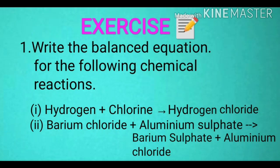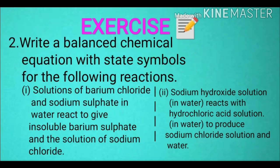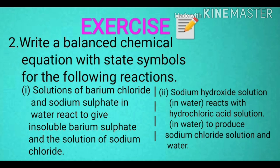Now here are some exercise questions for you. Question 1: Write the balanced equation for the following chemical reactions — (i) Hydrogen + Chlorine → Hydrogen Chloride; (ii) Barium Chloride + Aluminium Sulphate → Barium Sulphate + Aluminium Chloride. Question 2: Write a balanced chemical equation with state symbols for the following reactions — (i) Solutions of Barium Chloride and Sodium Sulphate in water react to give insoluble Barium Sulphate and a solution of Sodium Chloride; (ii) Sodium Hydroxide solution in water reacts with Hydrochloric Acid solution in water to produce Sodium Chloride solution and water.